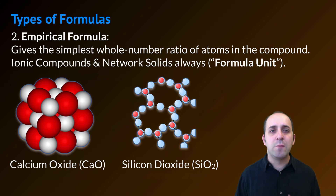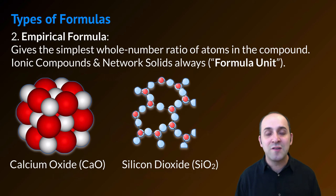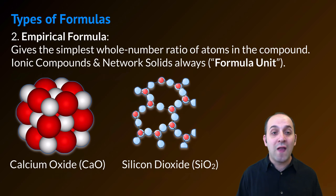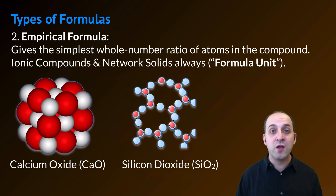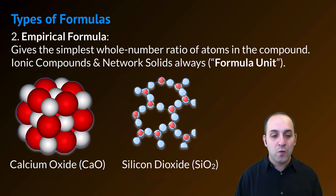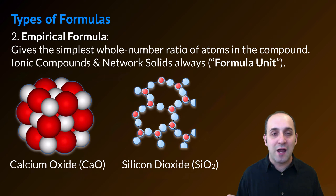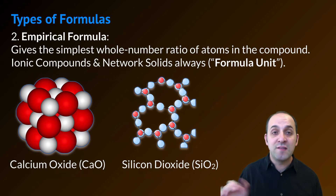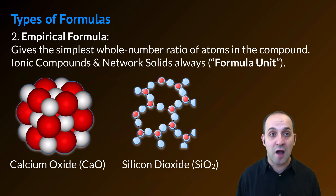The other kind of formula we've been dealing with is the empirical formula. The empirical formula is the simplest whole number ratio of atoms in the compound. This is true of all ionic compounds and network solids — what we show is called the formula unit or the empirical formula. Calcium oxide, CaO, has many, many calciums and oxide ions repeating, but we just call it CaO, its empirical formula. The same is true for network solids like silicon dioxide.